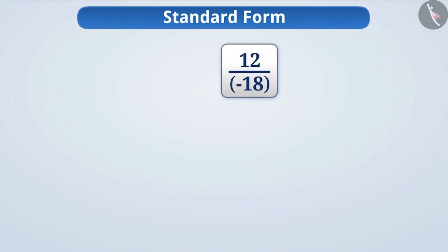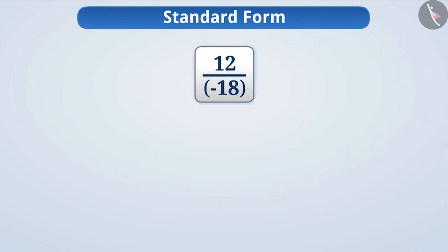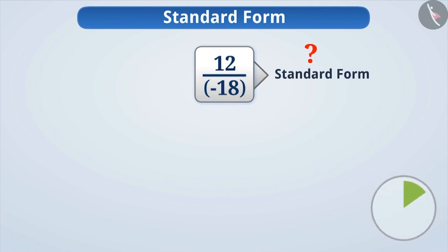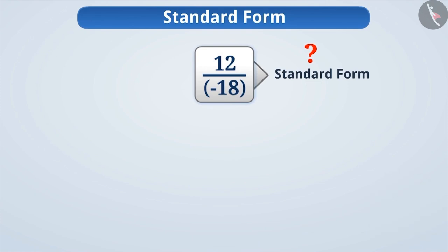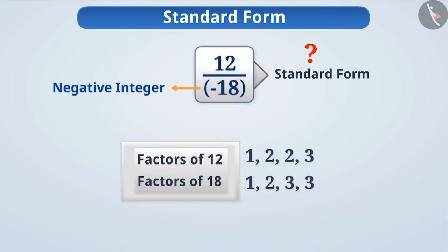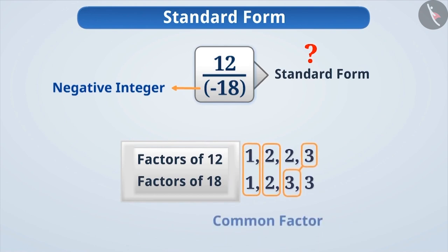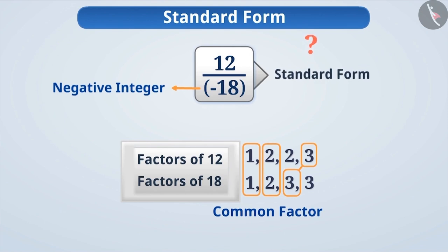Can you tell whether the second rational number is also in its standard form? Think! The denominator of this number is not positive, and the factors of its numerator and denominator have common factors 1 as well as 2 and 3. Therefore, 12 by minus 18 is not in its standard form.